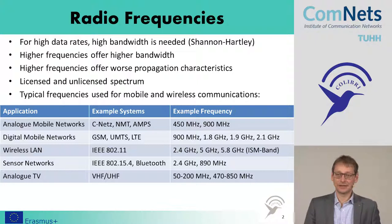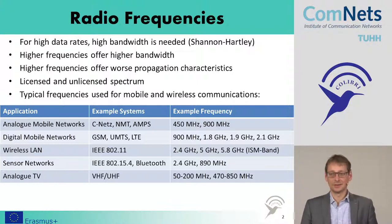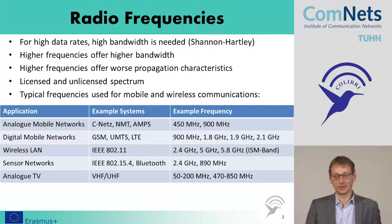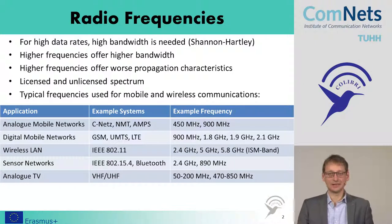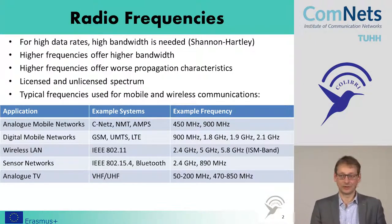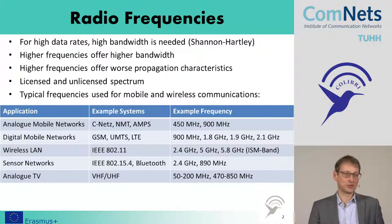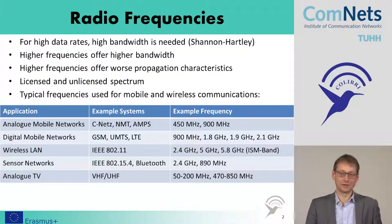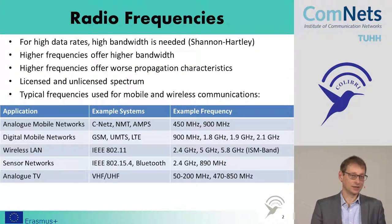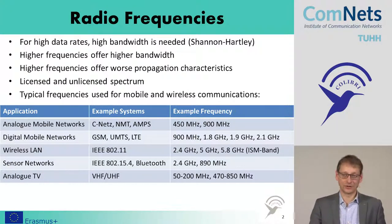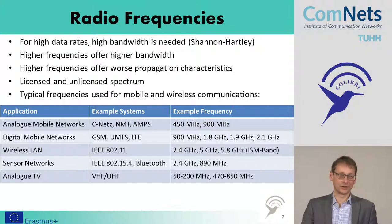If we have something like a gigabit per second data rate we want to have, and if we think about this might need a gigahertz of bandwidth, then we should have frequencies which are somehow satisfying the bandwidth requirements. This would be easy to satisfy at 10 GHz, but might be very difficult in areas around 500 MHz to 1.5 GHz.